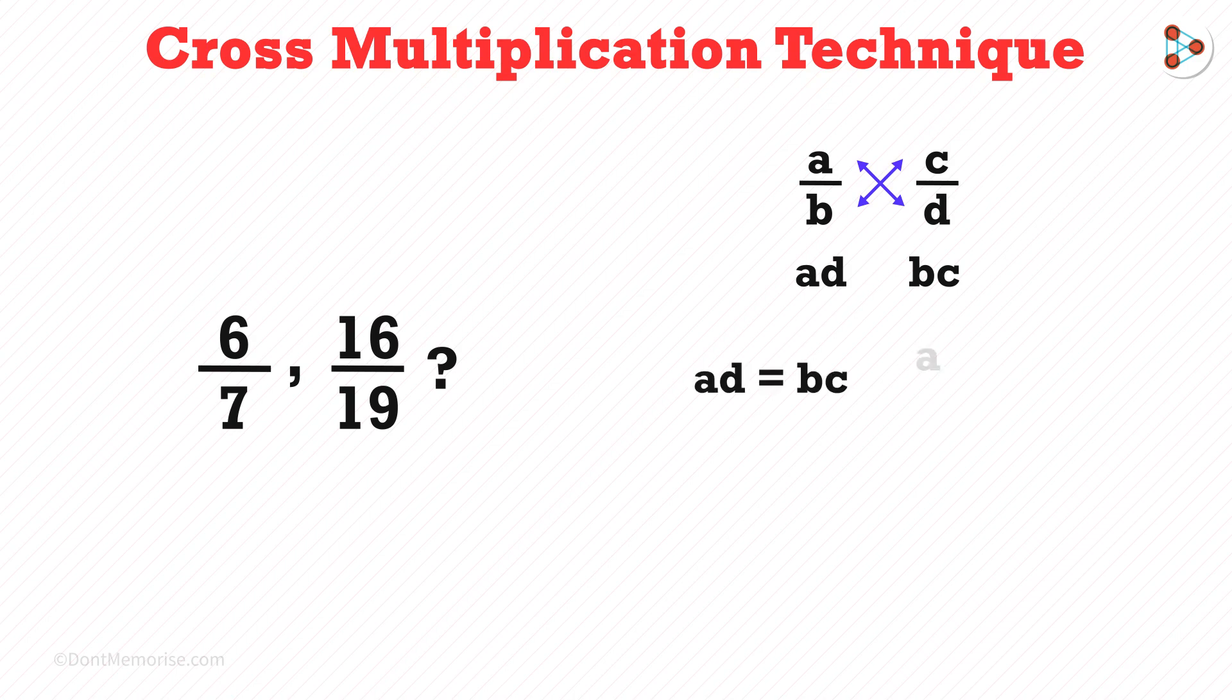If these two are equal, then the fractions are equal. If AD is less than BC, then the first fraction is less than the second one. And if AD is greater than BC, then the first fraction is greater.